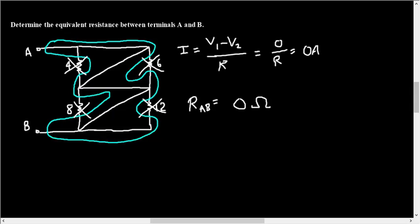Again, being shorted out means that you have the same node on both sides of the device. So resistors can be shorted out, so can current sources, voltage sources, anything. Here's our final answer to it.